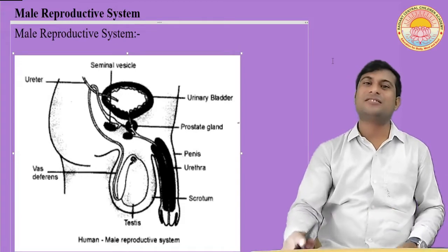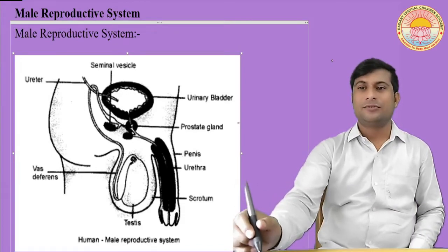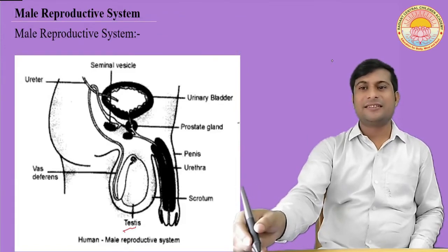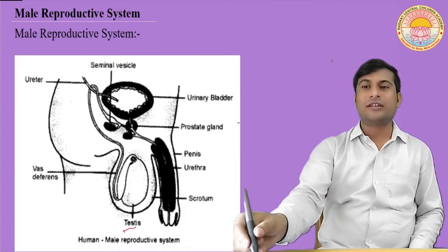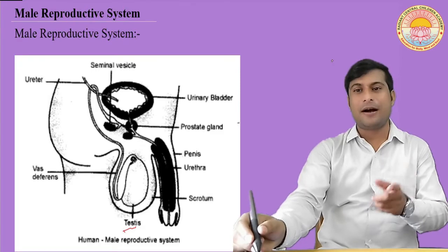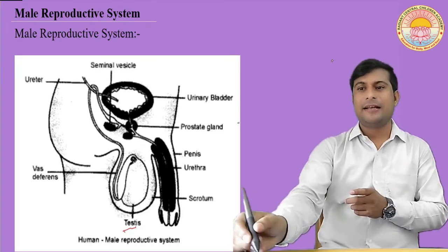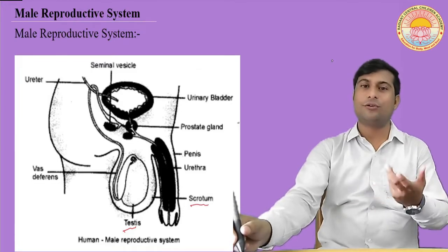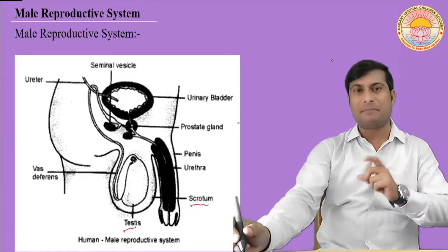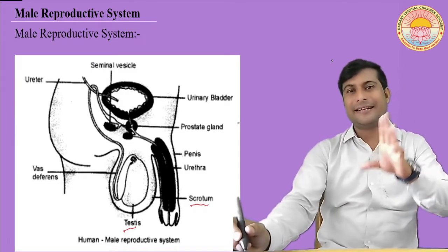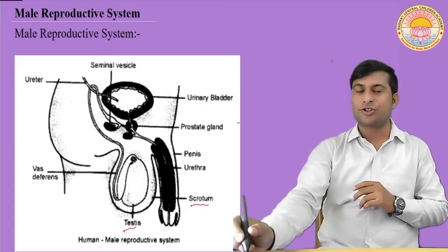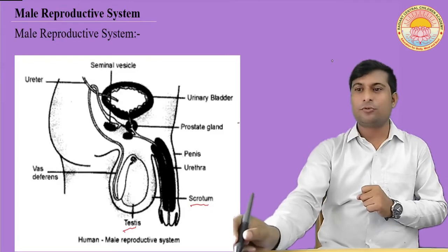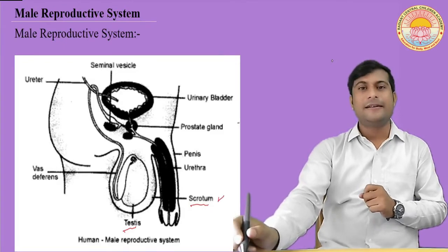You can see here on the screen — this is the testes, situated outside the abdominal cavity. The male germ cells are located in the scrotum. The scrotum is the outer membrane that protects the testes from severe shock and injuries. The testes is protected by the scrotum.